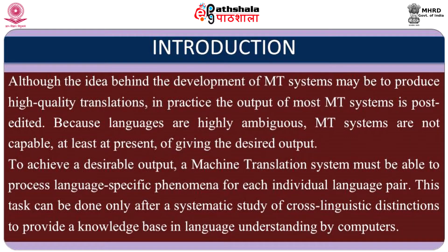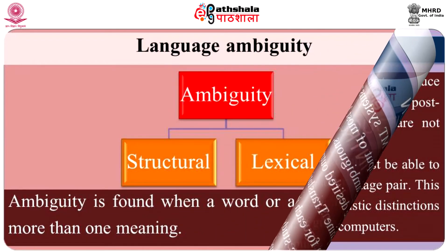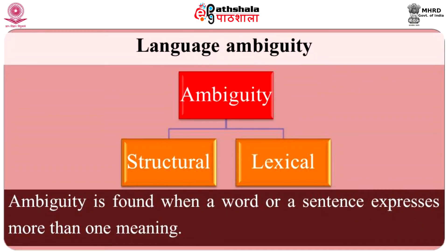To achieve a desirable output, a machine translation system must be able to process language-specific phenomena for each individual language pair. This task can be done only after a systematic study of cross-linguistic distinctions to provide a knowledge base in language understanding by computers. Before examining MT divergences, let us understand natural language ambiguities. Ambiguity is found when a word or a sentence expresses more than one meaning. There are two types of ambiguity that have been identified, namely structural and lexical ambiguity.